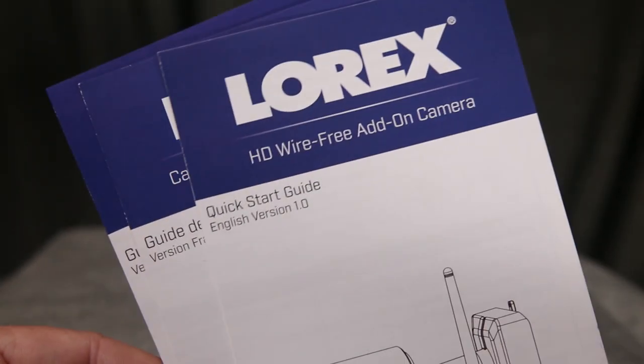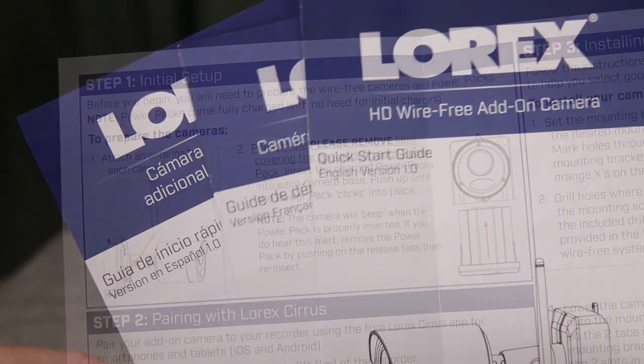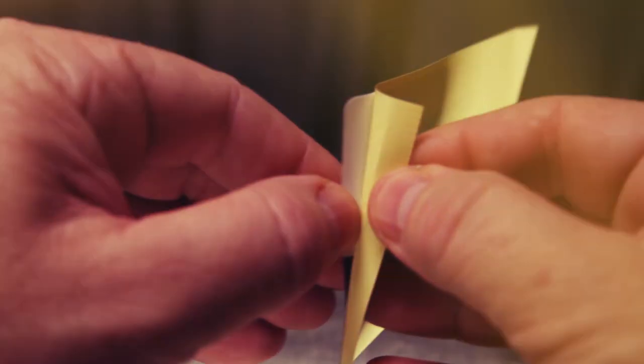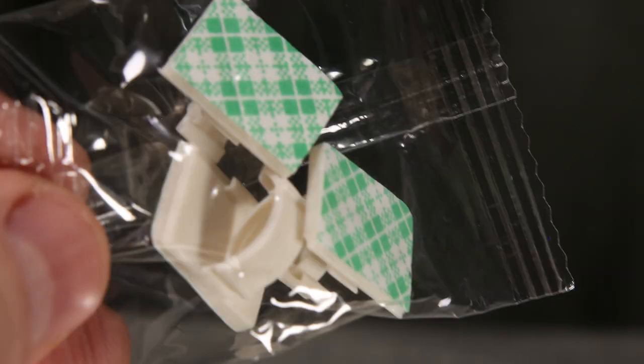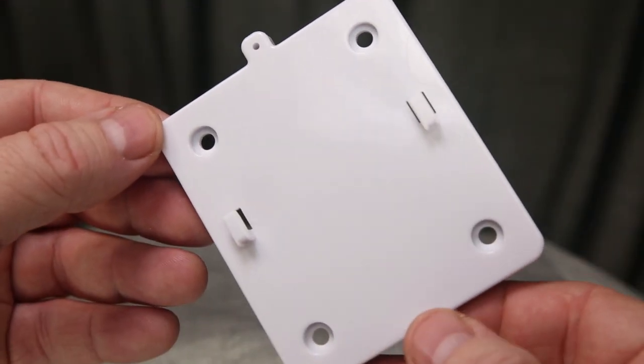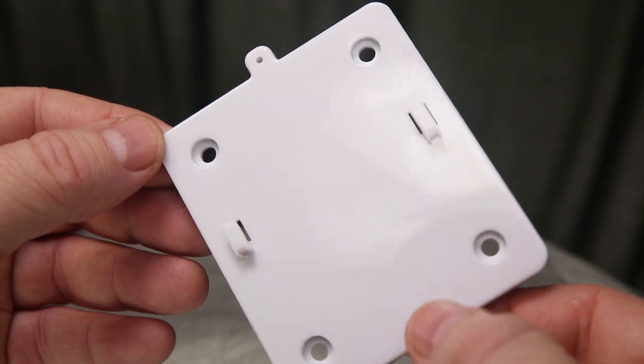Also included in the kit are quick start guides to help with installation and camera pairing with the system. Lorex window stickers and self-adhesive cable hold downs are also part of the package. Hex and Torx keys are included, as well as a unique mounting plate used to connect the camera to the surface.